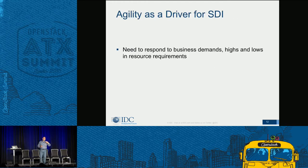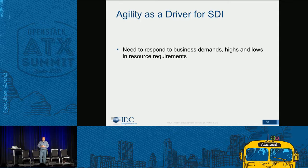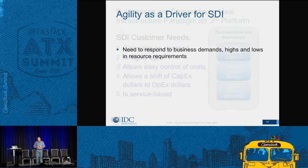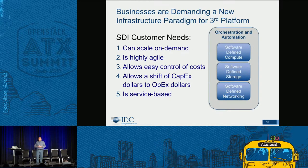On agility: we want to respond to business demands and automatically dial up or dial down based on resource requirements. If your business has a burst of demand, you want to be able to dial up your infrastructure, and when you return to normal mode, dial it back down. You want agility in your environment.